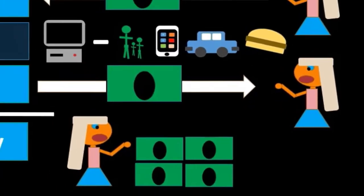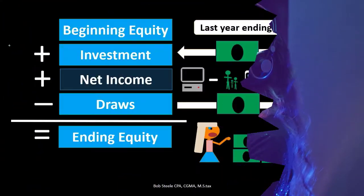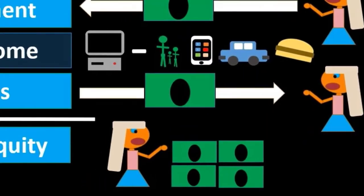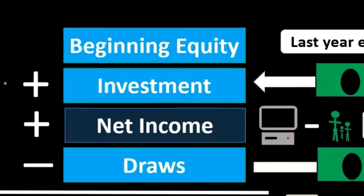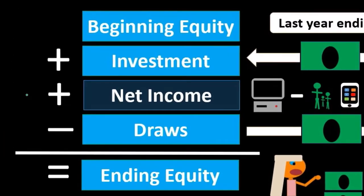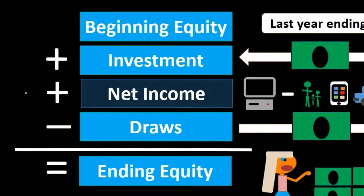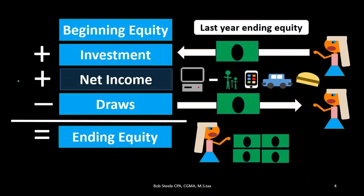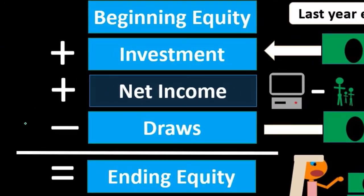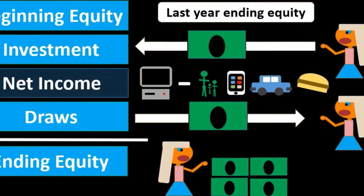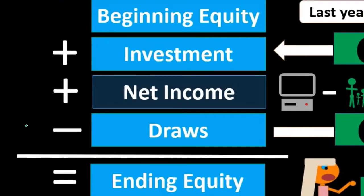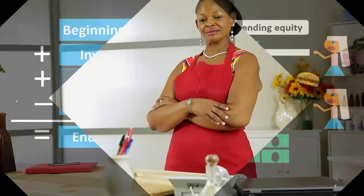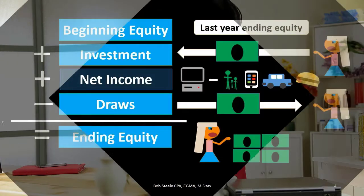So our calculation for the equity section always starts at beginning equity — not zero, but last period's ending equity. Then we reconcile the activity that happened to arrive at ending equity, which is then reported on the balance sheet. We take beginning equity, increase it by the owner's investments, increase it by net income (revenue minus expenses), and subtract any draws. That gives us our ending equity balance.